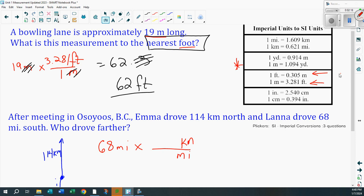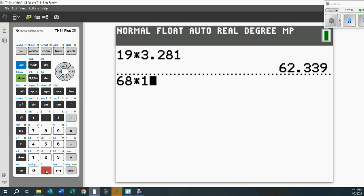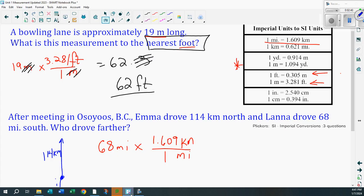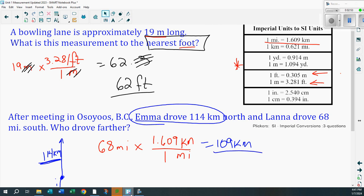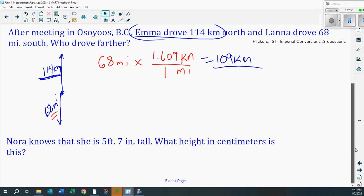There it is. So one mile, 1.609 kilometers. Easy. 68 times 1.609. And look what I got. Boom, I got 109 kilometers. So who drove further? Whoever drove 114, that's got to be Emma. Emma drove further because the other one's just 109 kilometers. There you go. That's how this works. Let's do one more question and go on to the next.